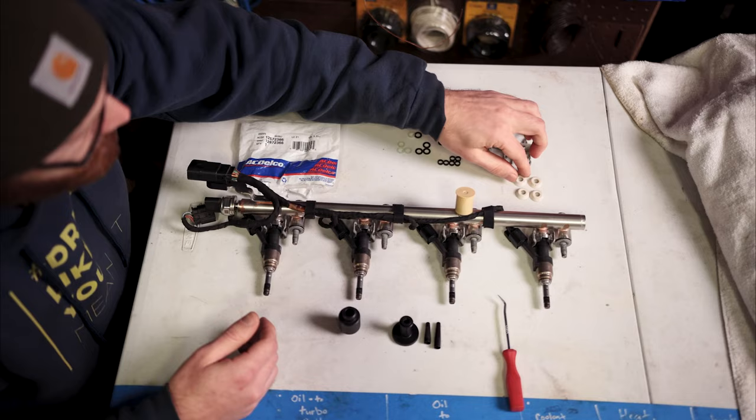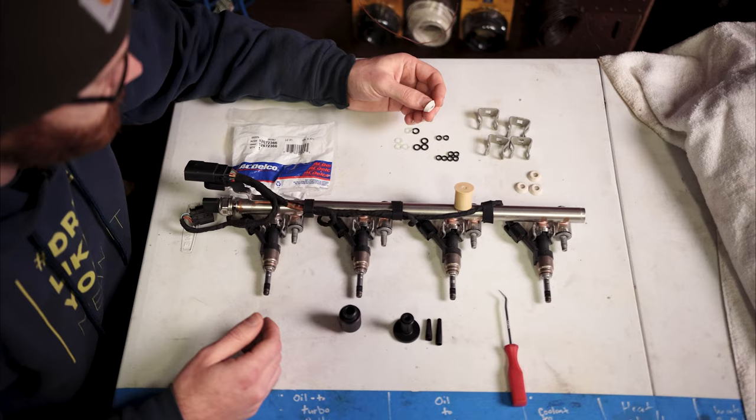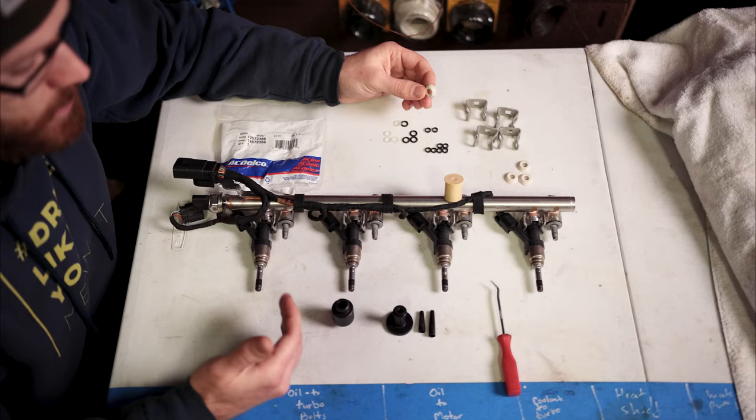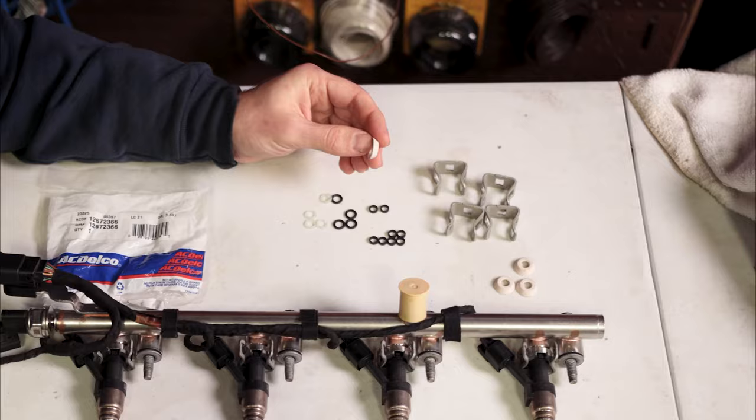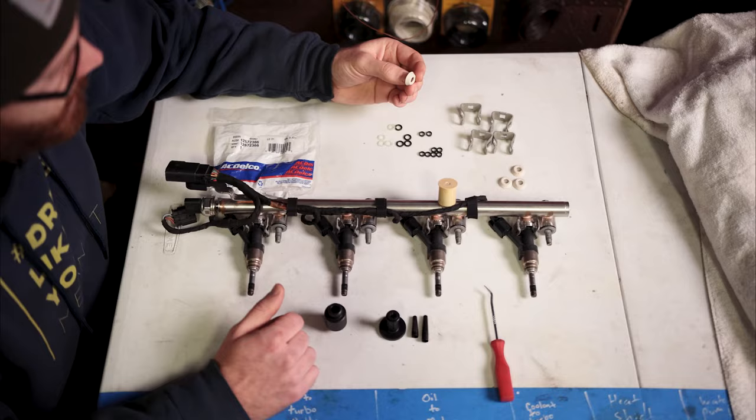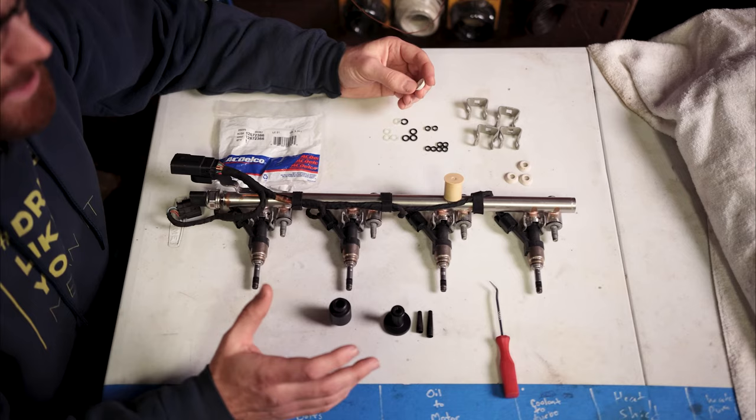One thing that GM added—I don't know if they added this in the 15 or 16 model year—since my Silverado was a 14, the first year of my generation, they added these little umbrellas. When I took apart the new motor I got from that 2016 truck that we're installing DoD in right now, it had these umbrellas. I didn't know what these were because it was my first time doing it.